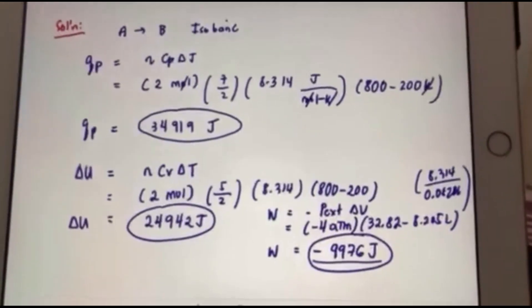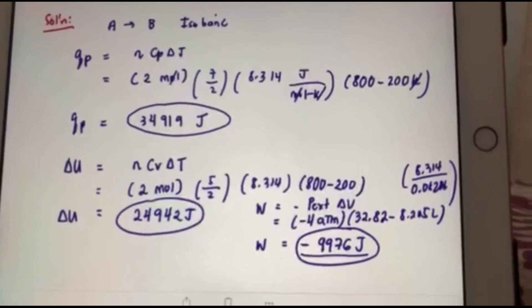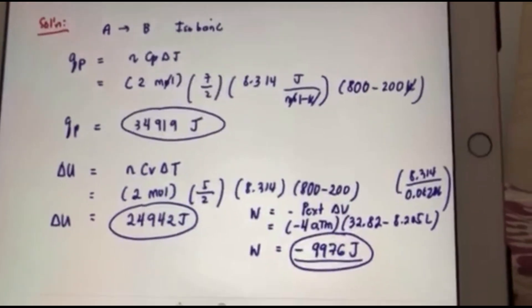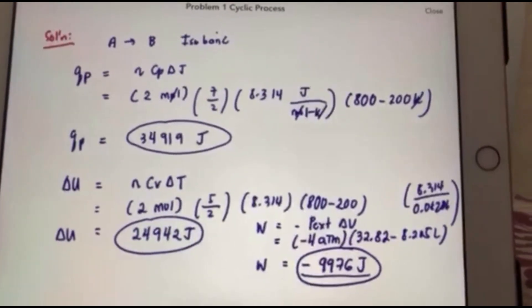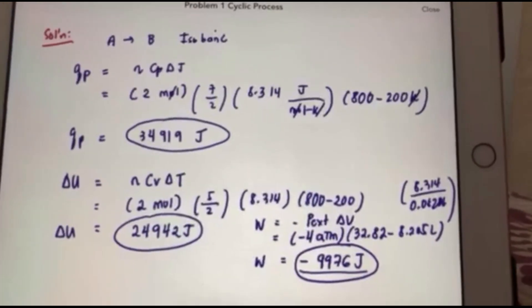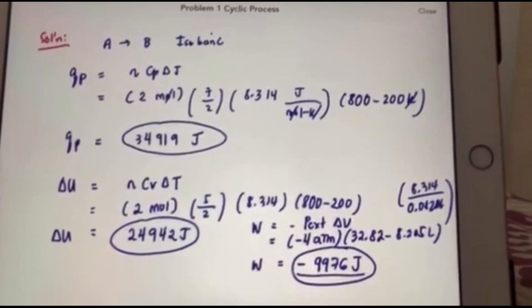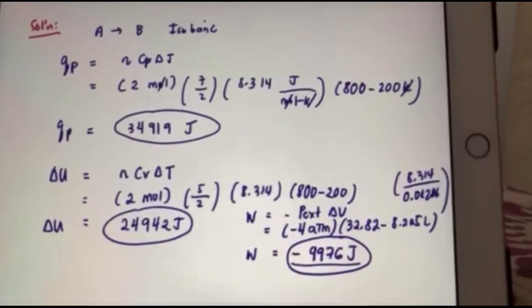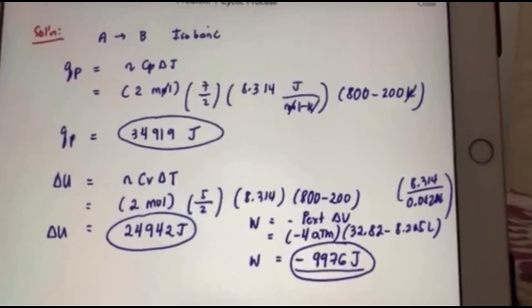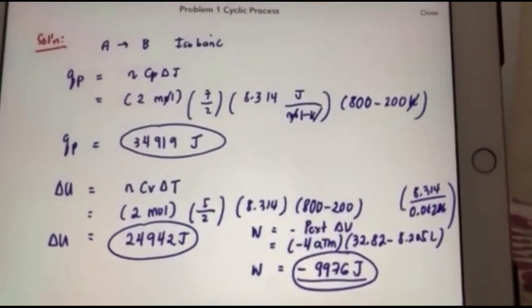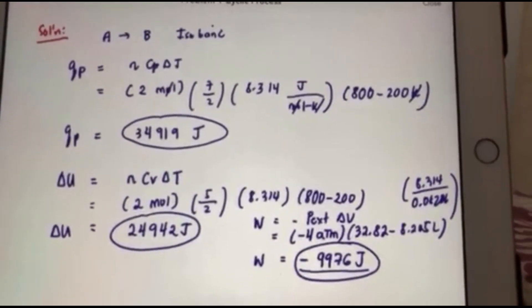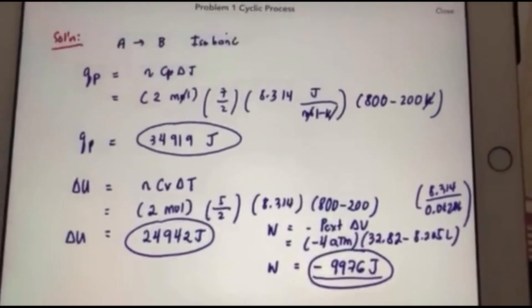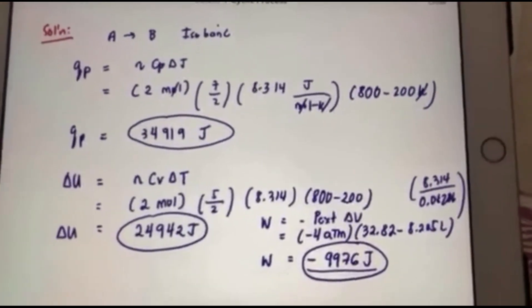Delta u is equal to nCv delta t, 2 times 5 halves times 8.314 times 800 minus 200. We will be getting 24,942 joules. For an isobaric process, work is equal to negative external pressure times delta v. Substituting, we have negative 4 atmosphere times 32.82 minus 8.205 liters times the conversion factor 8.314 over 0.08205. We will be getting work equal to negative 9,976 joules.